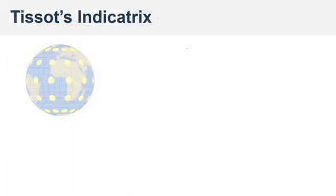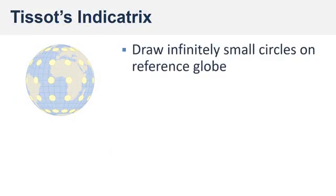These circles are referred to as Tissot's Indicatrices — each circle is an Indicatrix. These circles are drawn on the reference globe, and in the original conception they are infinitely small, meaning they have no dimensions. Of course, we have to make them larger to be able to see them on our map.